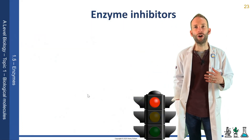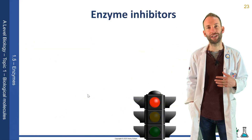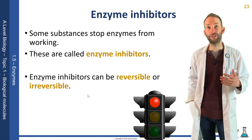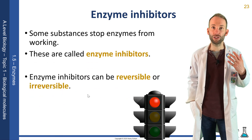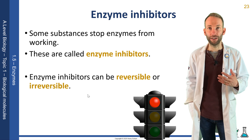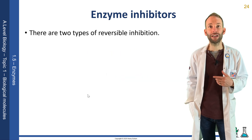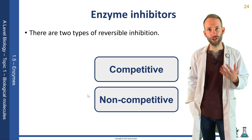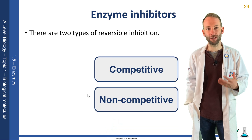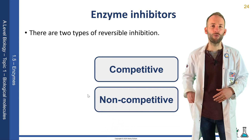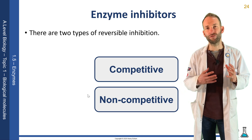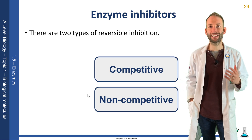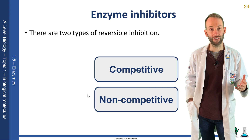Now some substances stop enzymes from working and these are called enzyme inhibitors. They could be reversible or irreversible, but the ones we're going to look at are reversible inhibitors. And there are two types of reversible inhibitor: competitive and non-competitive. Now they are useful because they can be used to control reactions, but once removed the reaction then returns to normal. So it's really helpful for cells to be able to switch reactions on and off essentially.